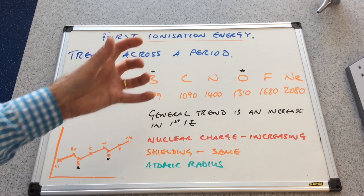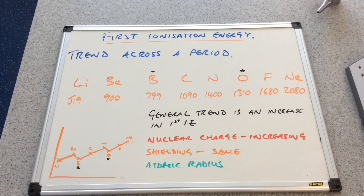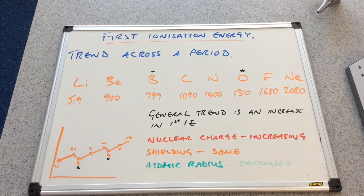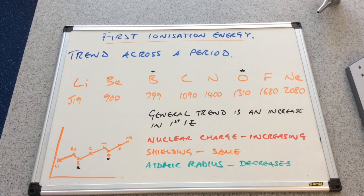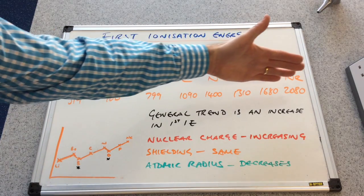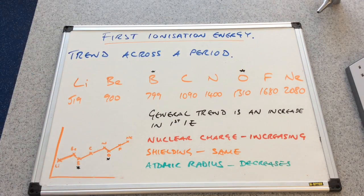you've got a greater pull from the protons in the nucleus on the outermost electrons. And so the atomic radius, as a result, decreases. So what's that going to do to the attraction between the nucleus and the outermost electron? It's going to increase it. And so therefore, in general terms, it's going to require more energy as you go across the period.